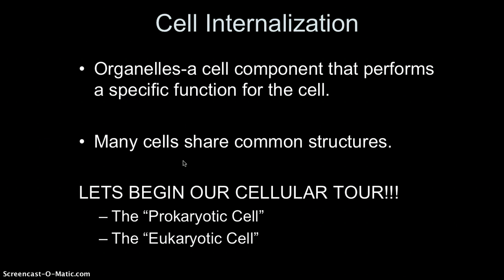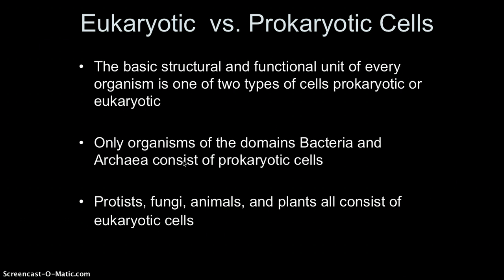We'll begin our cellular tour by looking at the difference between prokaryotic and eukaryotic cells. Every organism consists of one of two cell types: prokaryotic or eukaryotic. Organisms belonging to domain Bacteria or domain Archaea consist of prokaryotic cells — the simpler, likely the first cell types on our planet. The domain Eukarya includes the kingdoms Protista, Fungi, Animalia, and Plantae, all of which consist of eukaryotic cells.